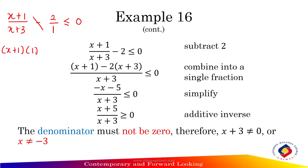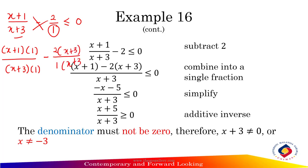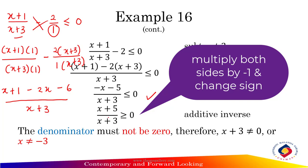Cross multiply to equalize the denominator: x plus 1 times 1 divided by x plus 3, minus 2 times x plus 3 divided by x plus 3. Simplify to get x plus 1 minus 2(x plus 3), which gives negative x minus 5 divided by x plus 3. Using the additive inverse, this becomes x plus 5 divided by x plus 3, and don't forget to change the sign from less than or equal to 0 to greater than or equal to 0.